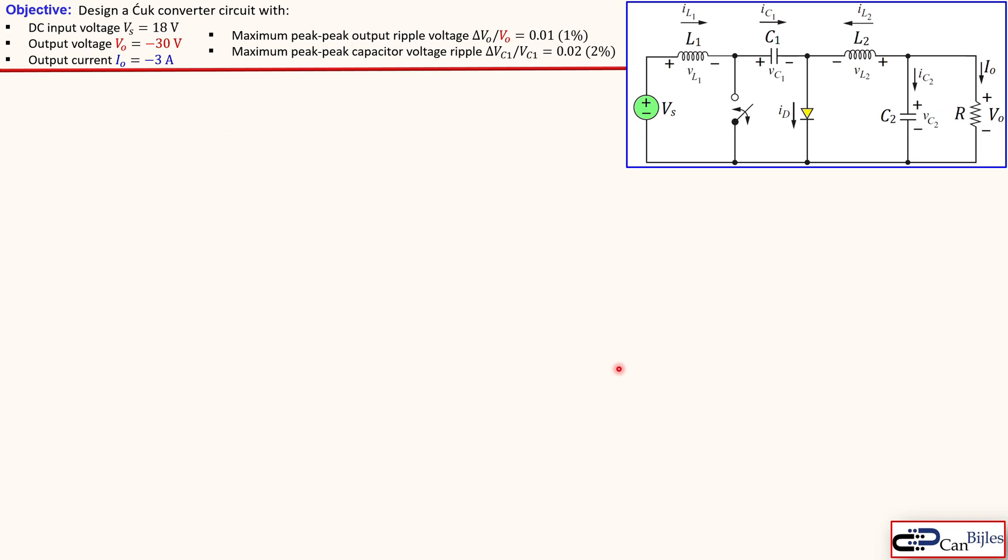A Cuk converter has exactly the same action as the buck-boost converter, but the main difference between the buck-boost converter and the Cuk converter is that the energy storage is done in the capacitors instead of the inductors. We'll see again our switch which is in this case again an ideal switch. We will see shortly what we need to do for our design.